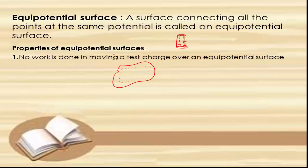Now we will see the properties of equipotential surfaces — these are also called the important laws or properties of equipotential surfaces. The first property: no work is done in moving a test charge over an equipotential surface, since all points on it are at the same potential.